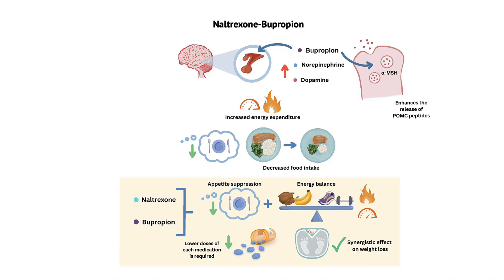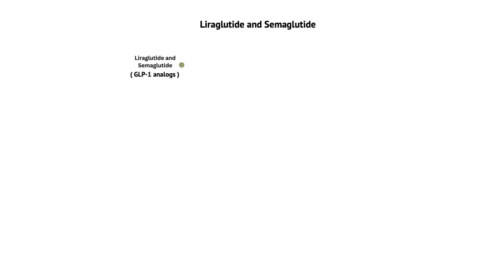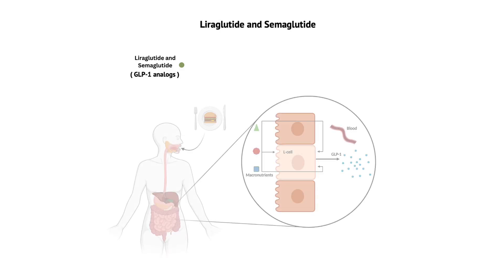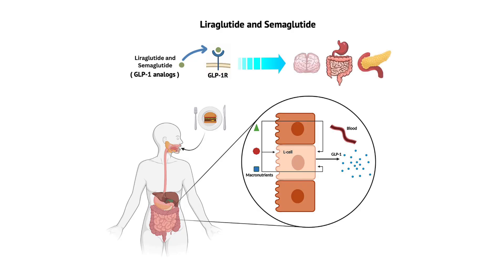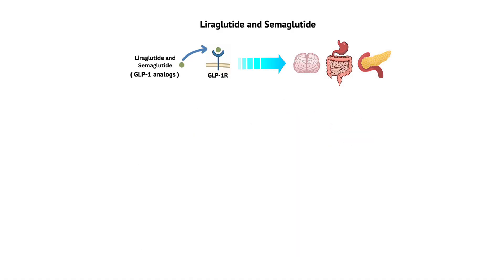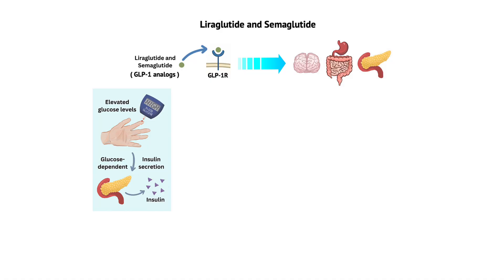Next, let's discuss the mechanism of action of liraglutide and semaglutide, which are both drugs from the glucagon-like peptide-1 (GLP-1) receptor agonist class. GLP-1 receptor agonists are injectable medications used for weight loss and diabetes management. Liraglutide and semaglutide are synthetic analogues of human GLP-1, a naturally occurring incretin hormone secreted by the L-cells of the small intestine in response to food intake. Their mechanism of action involves binding to and activating GLP-1 receptors located in various tissues, such as the pancreas, gastrointestinal tract, and central nervous system. First, they stimulate insulin secretion from pancreatic beta cells in a glucose-dependent manner, meaning insulin is released only when blood glucose levels are elevated, helping prevent hypoglycemia and enhancing blood glucose control.